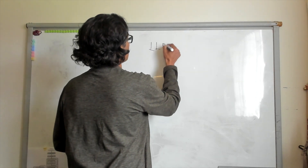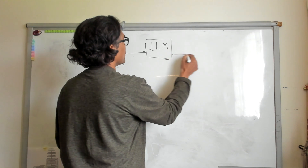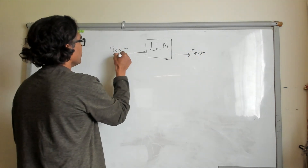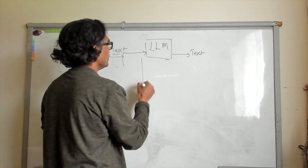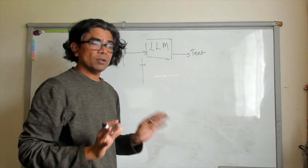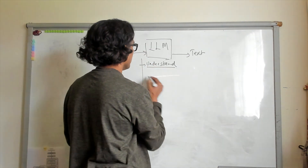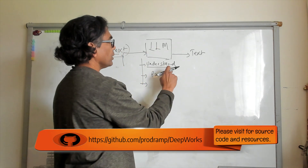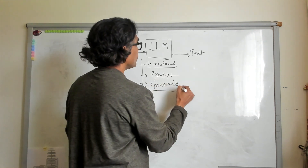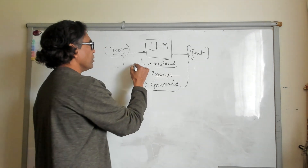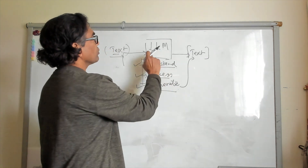Our focus is large language models. We know that large language models are designed or trained to take text as an input and generate text. In order to generate text, these models have to understand the input, process what they understood to figure out how to generate the output, and finally generate that text. So understanding, processing, and generating are the three different activities that happen within the scope of a large language model.